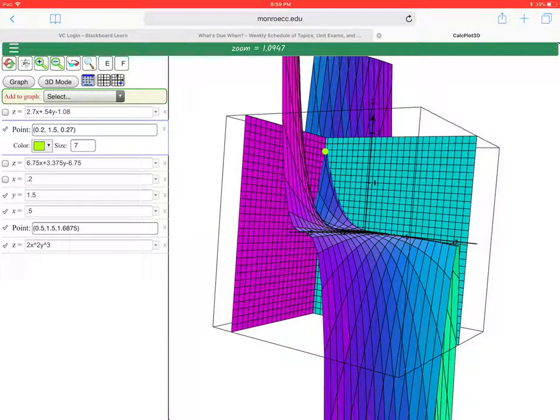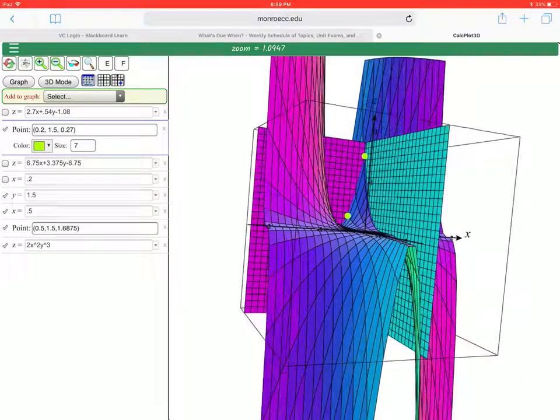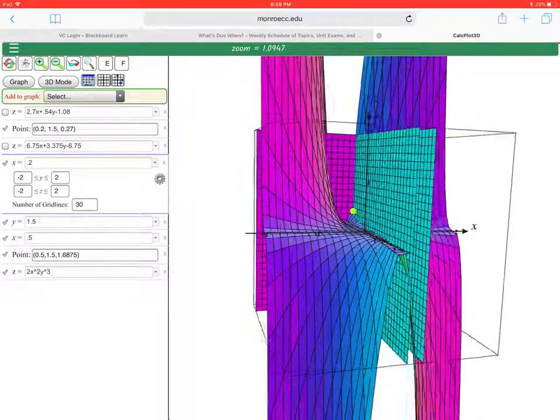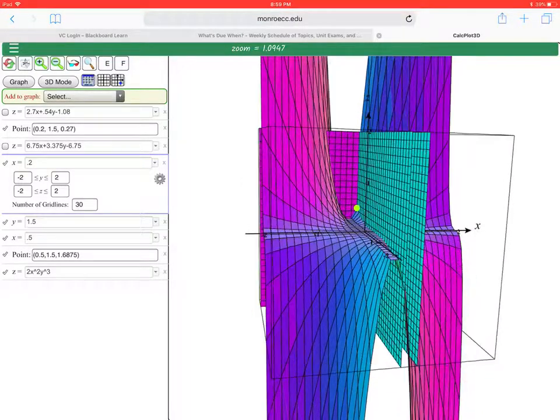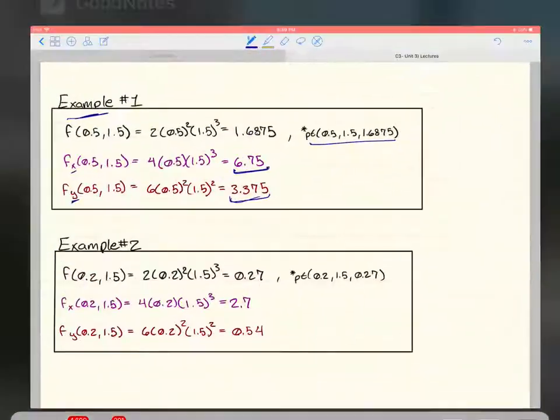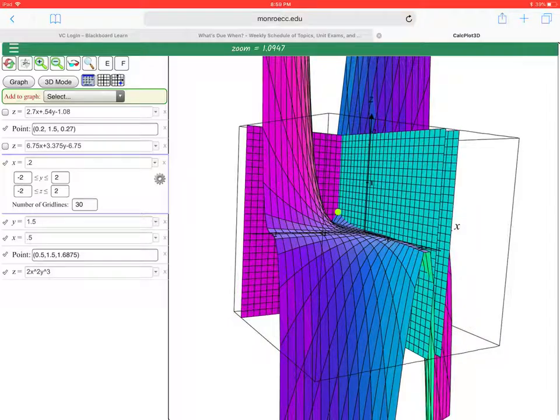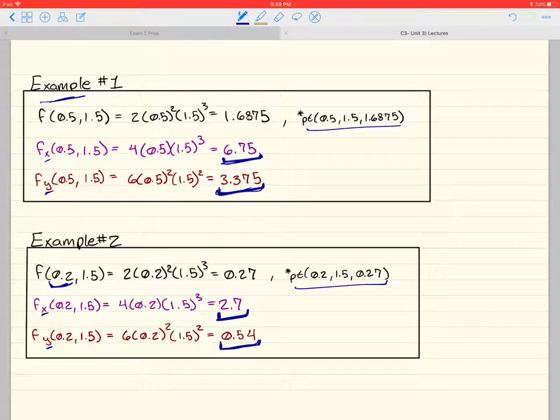And if we plot this new point, there we go. It's in that little valley down there. And we'll zoom up on that new plane to get a better understanding of what's going on here. There's our x squared. It's definitely not as steep as it was before. The tangent line on that purple plane would be 2.7. And then, the tangent line on the cyan plane would be 0.54.